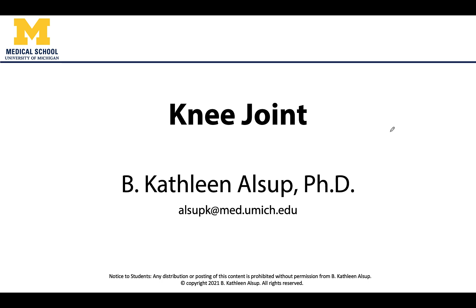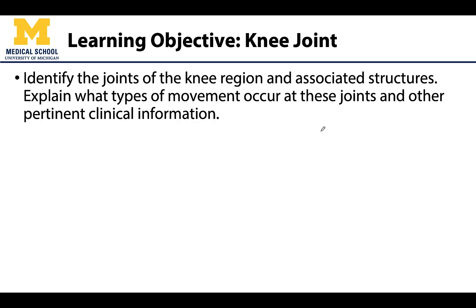Hello anatomy friends, this is Dr. Alsup. In this video we will get into one of my all-time favorites: the knee joint. Our goals are to understand the different joints that fall under the category of the knee joint — it's actually three separate joints — and we will talk through the many associated structures: the ligaments, tendons, and menisci. We will discuss movements, clinical information, and how that melds with the anatomy.